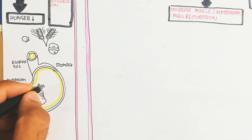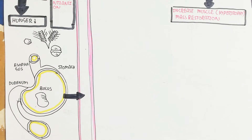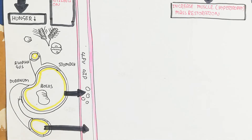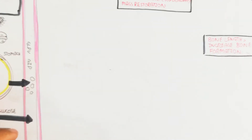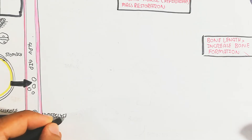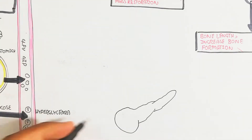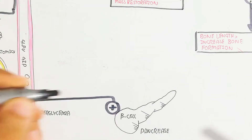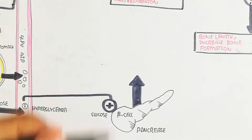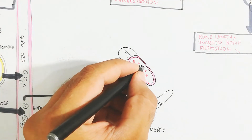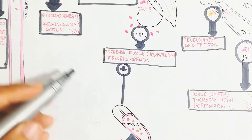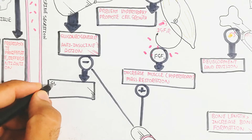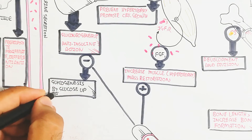In the fed state, food moves into the esophagus and stomach, forming a bolus and releasing GLP-1 and GIP. Glucose is absorbed into the blood, causing hyperglycemia. This causes glucose to enter beta cells, which then exocytose insulin-containing granules into the blood. Increased insulin inhibits gluconeogenesis and increases glycogenesis through glucose uptake, inhibiting the anti-insulin action.